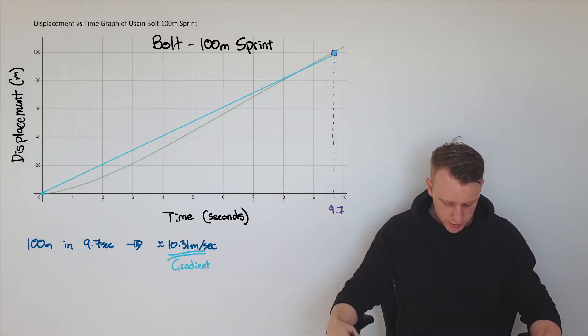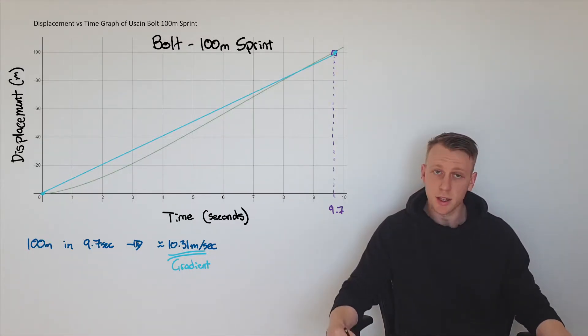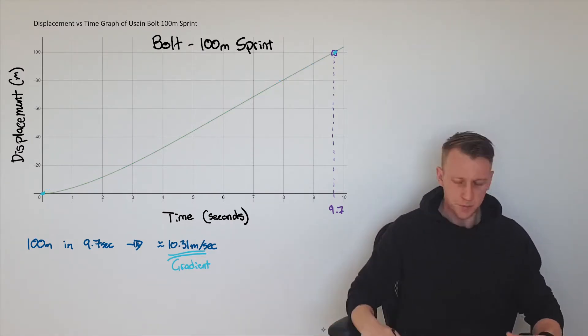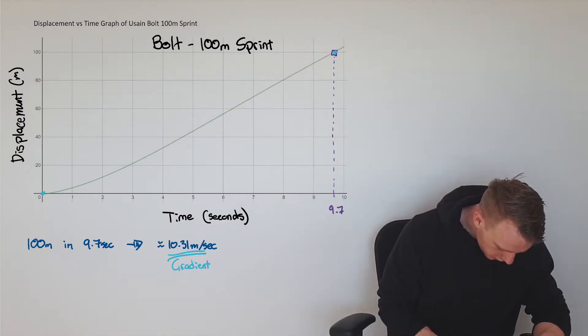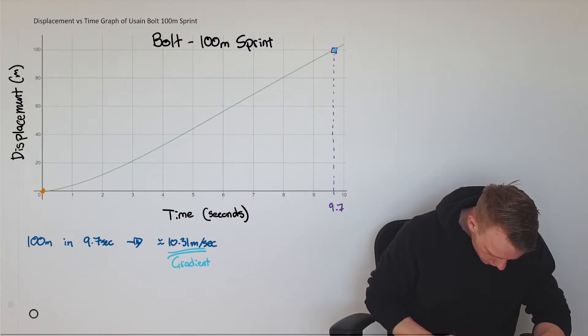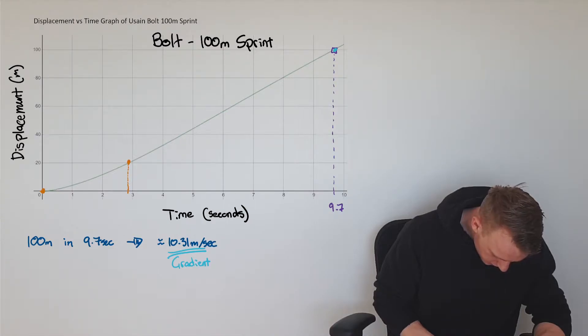Let's consider the gradient for the first 20 meters of this race. If we go from this point here up to the 20 meter mark, which is about there, it takes him about 2.9 seconds.